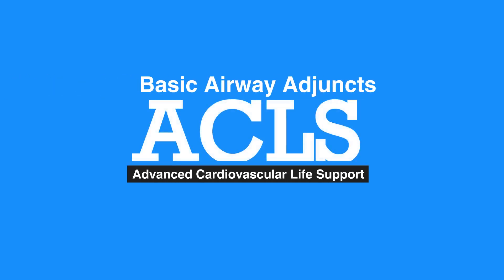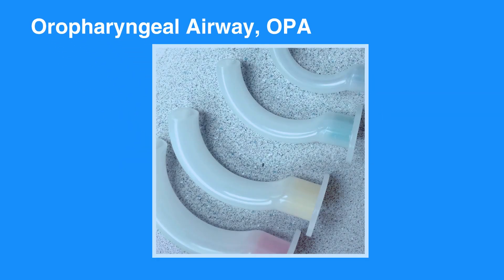Welcome to the lesson on basic airway adjuncts. In this video we'll discuss when to use the three basic airway adjuncts: oropharyngeal airway, nasopharyngeal airway, and suctioning. The oropharyngeal airway, or OPA, is a J-shaped device that fits over the tongue to hold the soft hypopharyngeal structures and the tongue away from the posterior wall of the pharynx.